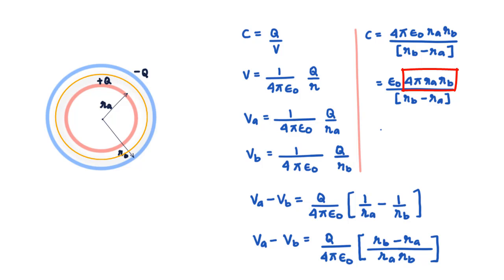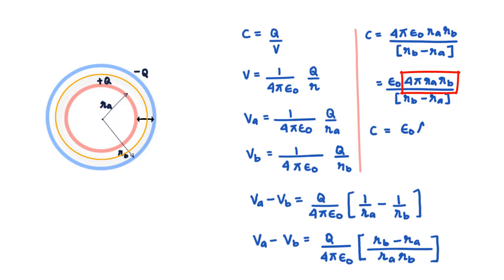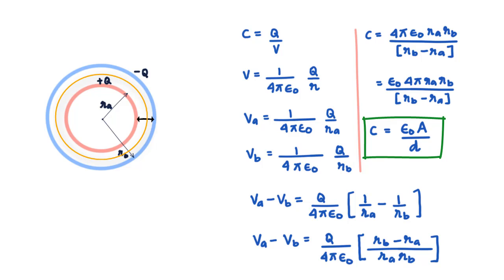R_b − Rₐ is simply the distance between the two spheres — call it D. Then the capacitance of the spherical capacitor is C = ε₀A/D, which is the same expression as for a parallel plate capacitor. The conclusion is that if you have a spherical capacitor where the distance between the spheres is much smaller than the radii, it is equivalent to a parallel plate capacitor with the same plate area and separation D.